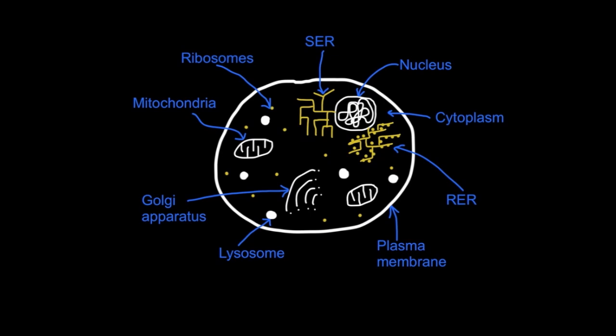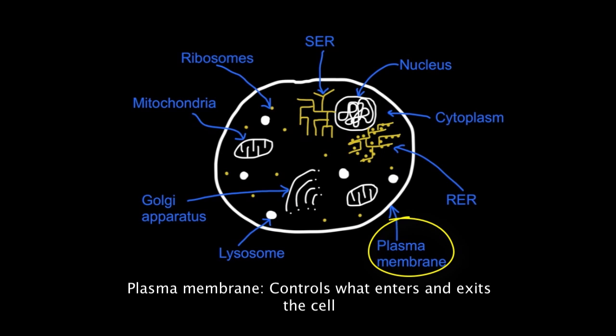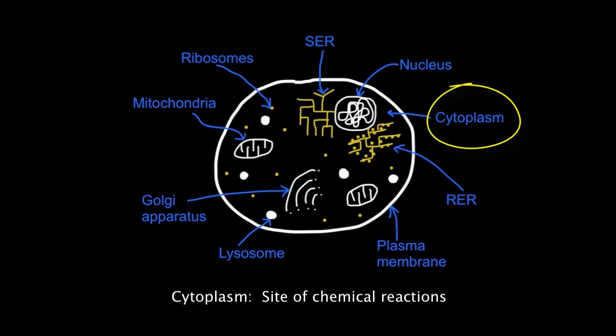Eukaryotic cells have a compartmentalized structure. They are surrounded by a plasma membrane which controls what enters and exits the cell, and they have cytoplasm, the fluid in which chemical reactions take place inside.